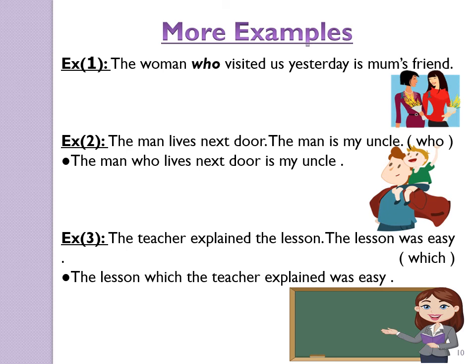Example three: The teacher explained the lesson. The lesson was easy. Rewrite the two sentences in one sentence joined with 'which'. The word 'the lesson' is repeated in both sentences. Answer: The lesson which the teacher explained was easy. The relative clause starts with 'which' and the main verb 'was' comes just after the relative clause.